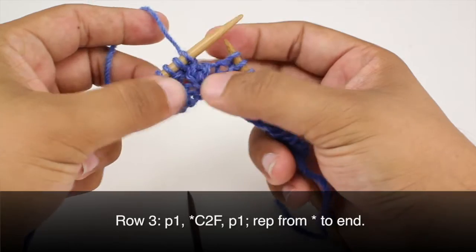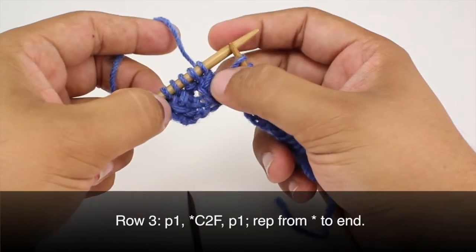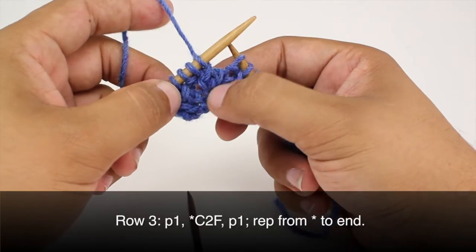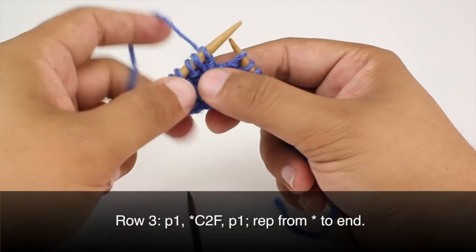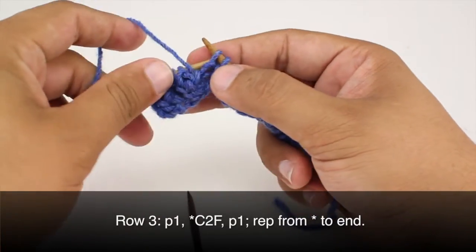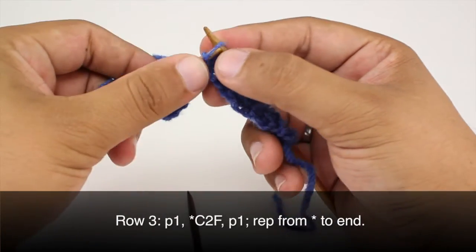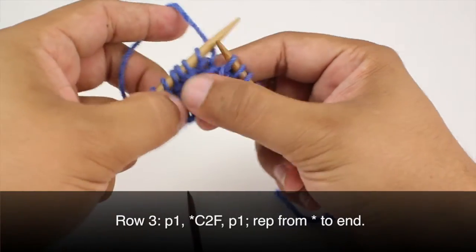And that creates the same left twist or left leaning stitch as a cable 2 front does. So then we'll purl 1. So continue repeating this sequence all the way until the end of the row.